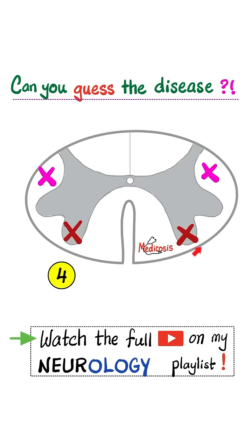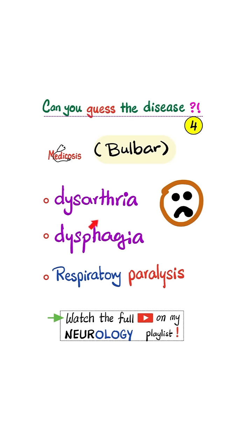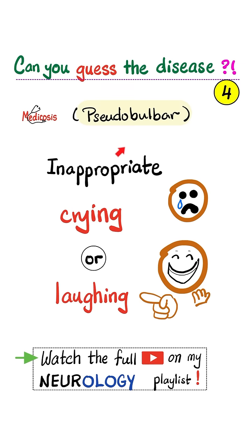These parts of his spinal cord degenerated, and he became paralyzed. Now he can't talk, can't swallow, can't breathe. Sometimes he cries for no obvious reason.